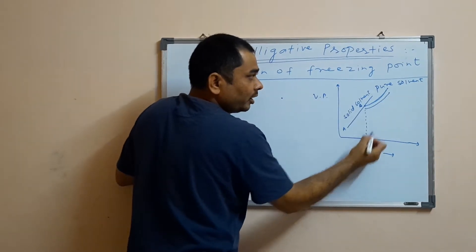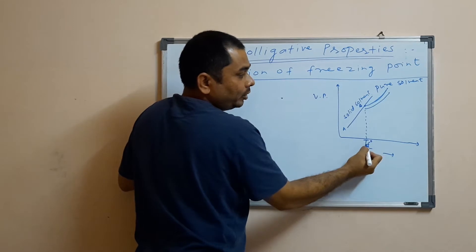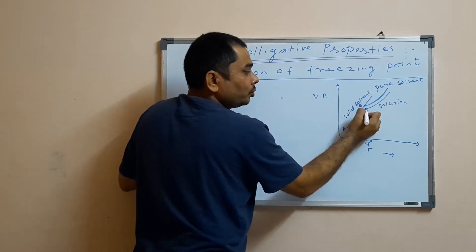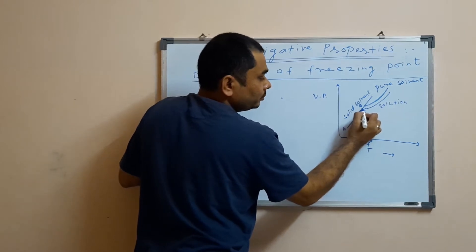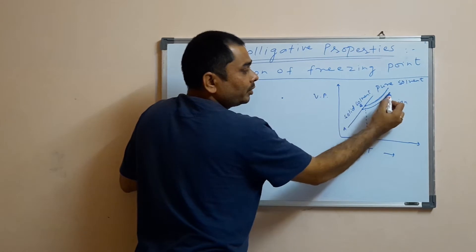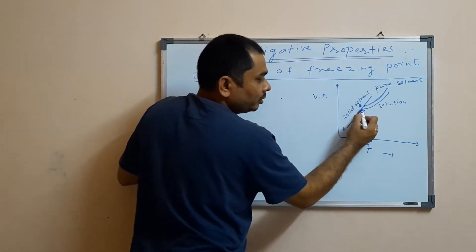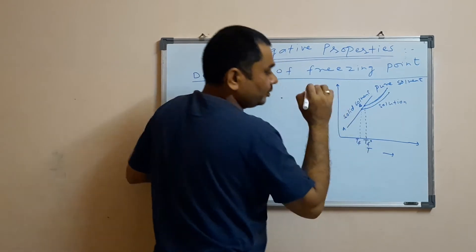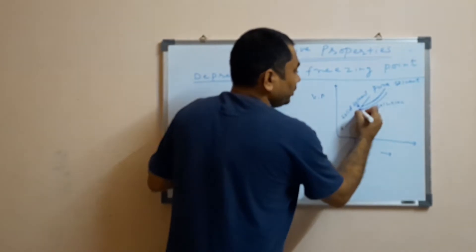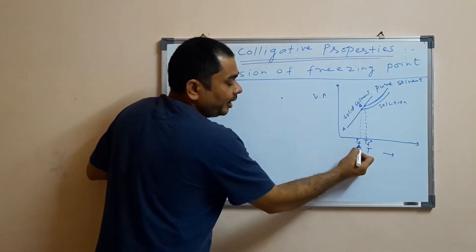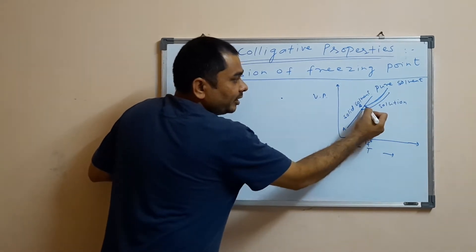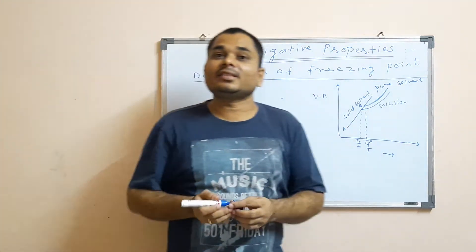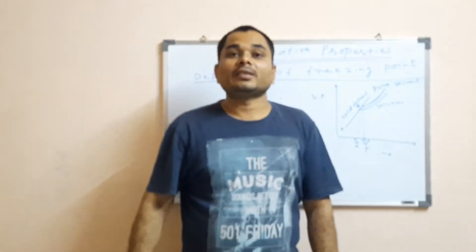At the temperature Tf0, the vapor pressure of the solution goes on decreasing. Finally, there is an intersection between the vapor pressure curve of the solution and the vapor pressure curve of the solid solvent. The temperature corresponding to this intersection is the freezing point of the solution, Tf. Tf is lower than Tf0 — the freezing point of the pure solvent. This decrease is called depression of freezing point.